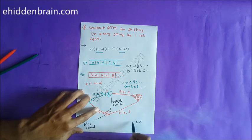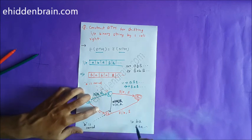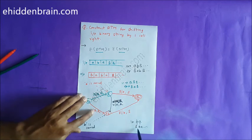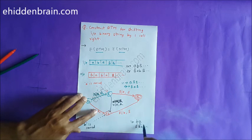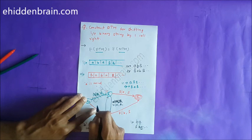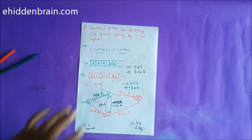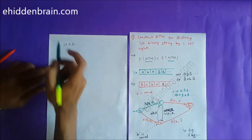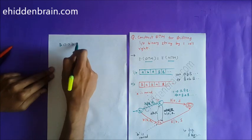Now consider input 'ba'. The 'b' is replaced by blank (B) at q0, moving to q3 carrying 'b'. On q3, we find 'a', which should be replaced by the carried 'b' — so 'a' is replaced by small 'b' and we transition to q1 carrying 'a'. From q1, we then replace the next blank (B) with small 'a' and halt.